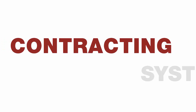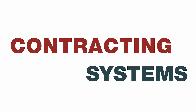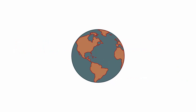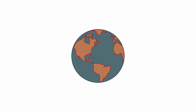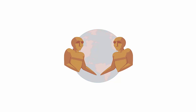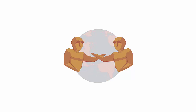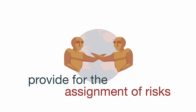In this animation, we're going to learn a bit about contracting systems. We'll get an overview of what contracting systems are and what they do. In the modern world, we need contracting systems. A contracting system is there to provide a framework for individuals and businesses to enter into contracts, and what the contracting system does is essentially provide for the assignment of risks between the parties — in this case, the buyer and the seller.